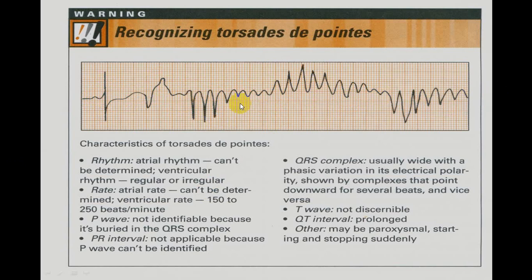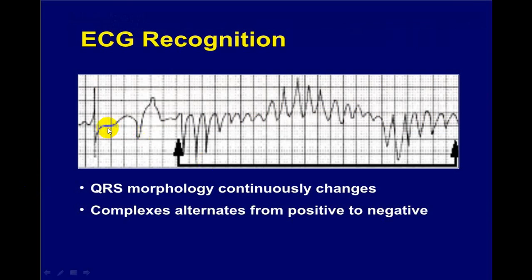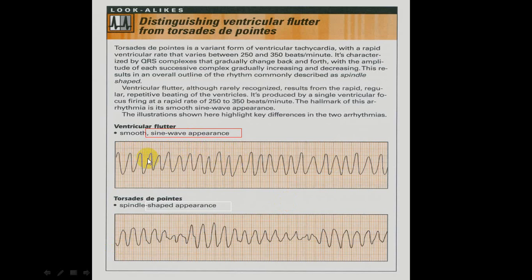This is classical torsades de pointes: prolonged QT, ventricular premature beat, then torsades de pointes with changing axis. Differentiate it from ventricular flutter: in ventricular flutter you get a somewhat sine wave appearance, while torsades has a spindle shape with gross axis changes and changing QRS morphology. In ventricular flutter the amplitude may change slightly but the appearance is nearly the same sine wave, with rate around 250 to 350, typically around 300.